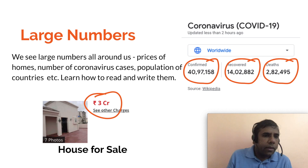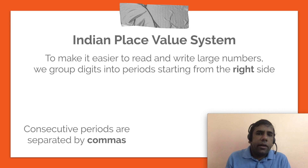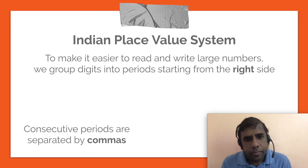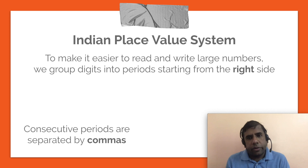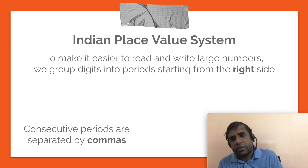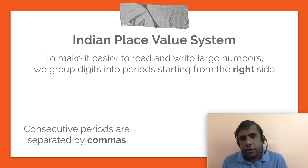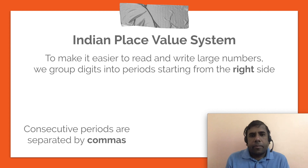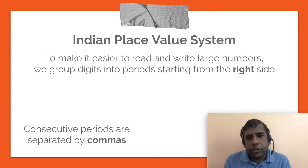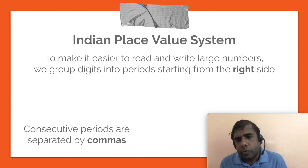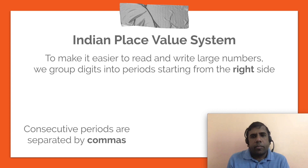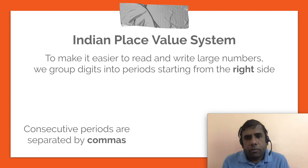Why do we need the Indian place value system? In this system, each digit in the number is assigned a place, and numbers are read and written in a way that makes it easy to handle. For large numbers, it is better to group them together into smaller periods starting from the right side, so that it becomes easy for us to read and write them.